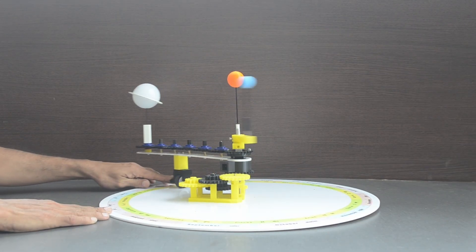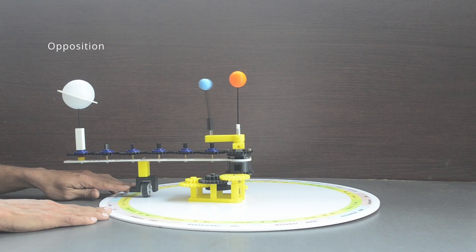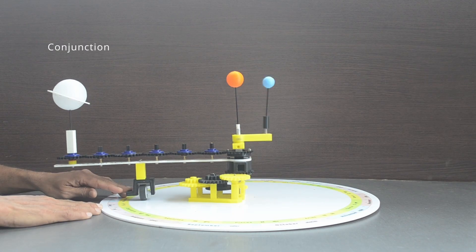Just to recap, Saturn and Earth are said to be in opposition at this location and are in conjunction at this location.